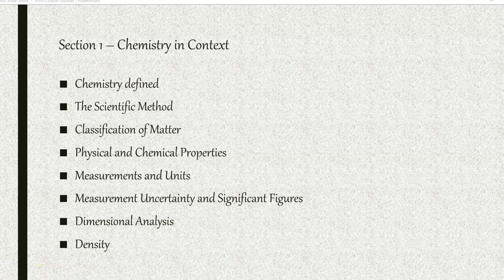So starting in section one, we will start by defining chemistry followed by looking at the scientific method. Then we'll get into the classification of matter and looking at physical and chemical properties of matter. Mathematical applications then follow with measurements and units, significant figures, dimensional analysis, and then the application to density.